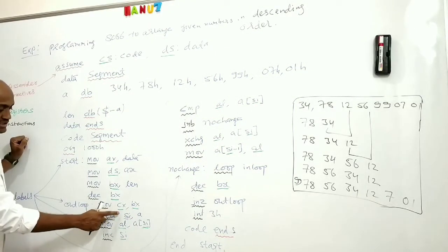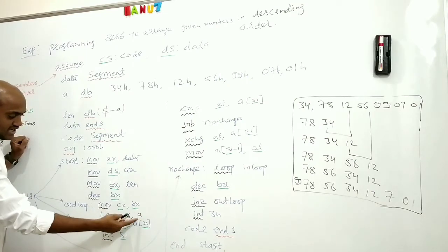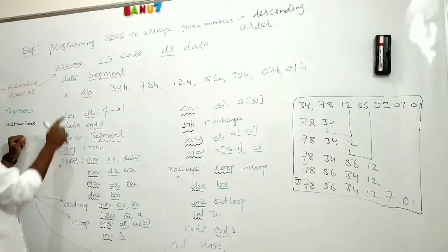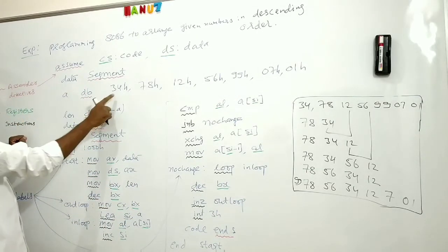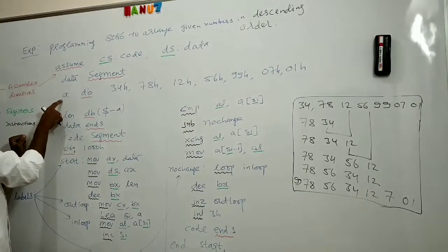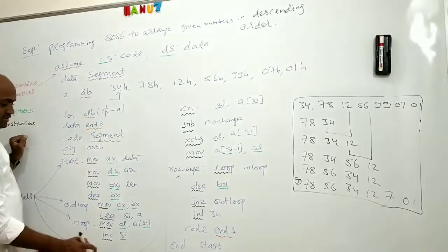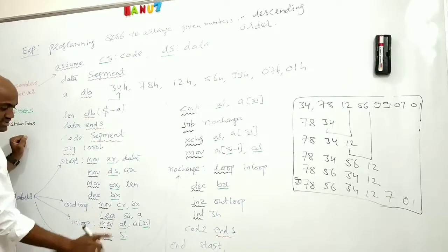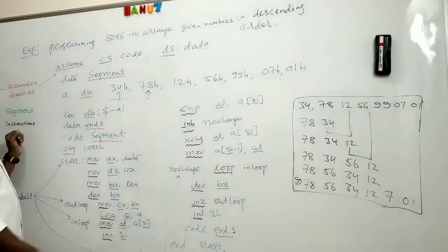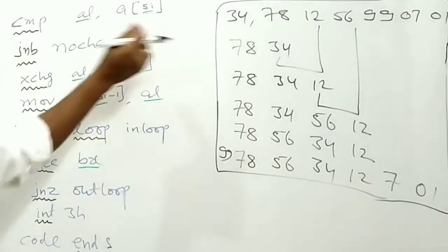LEA SI, A. Load effective address. It is loading the effective address of A and SI is acting like a pointer to that memory. A is nothing but the name of the numbers which are there in the memory. So I am calculating its address and storing that value into SI. So SI is initially pointing to this memory location. I copied that number into AL then incrementing SI. SI is now pointing to this memory location. I am comparing both of them, first number with second number as explained in the logic.